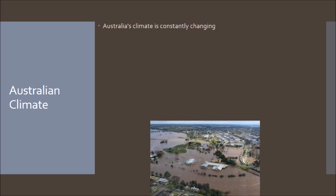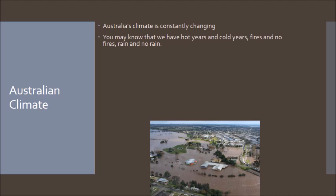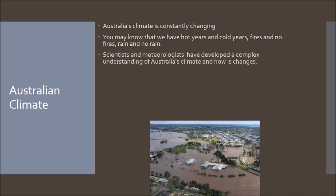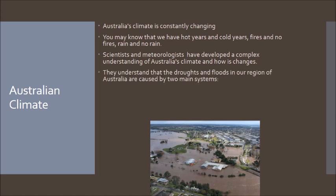Australia's climate is constantly changing. You can see that in the picture of Bairnsdale — there's not much left of Haynesville Road or the skate park. We know this doesn't happen every year; it happens pretty rarely. Scientists and meteorologists have developed complex understandings of Australia's climate and can predict these patterns. They understand that drought and floods in our region are caused by two main systems we're going to look at over the next week.